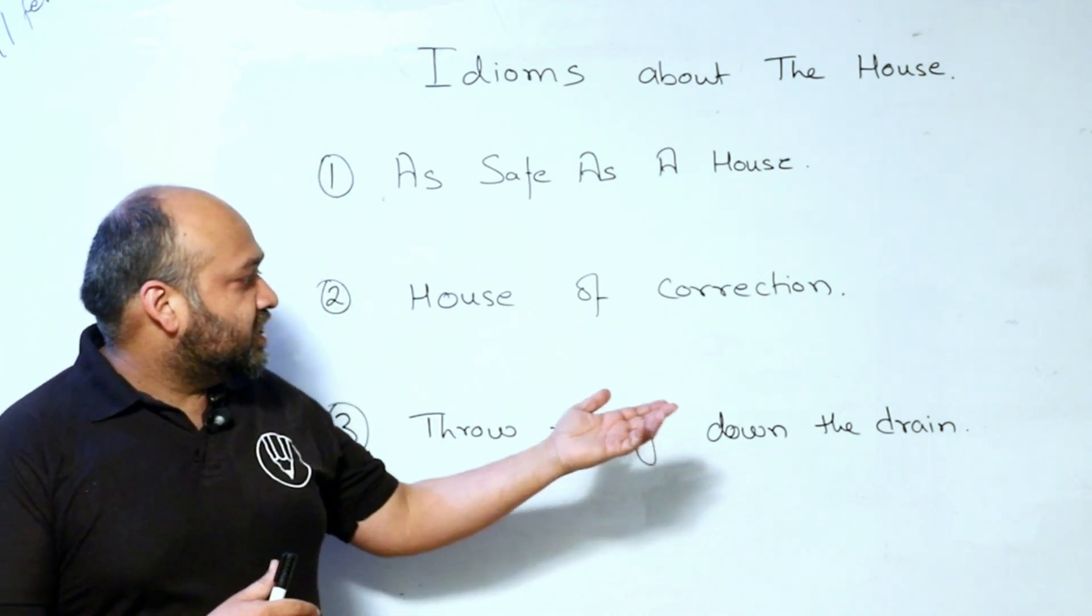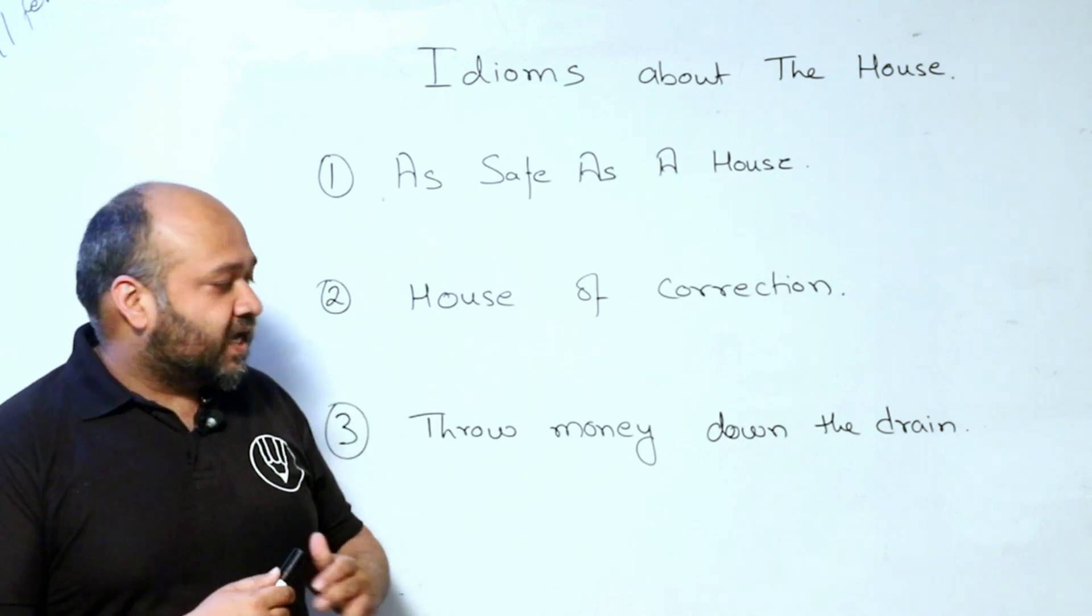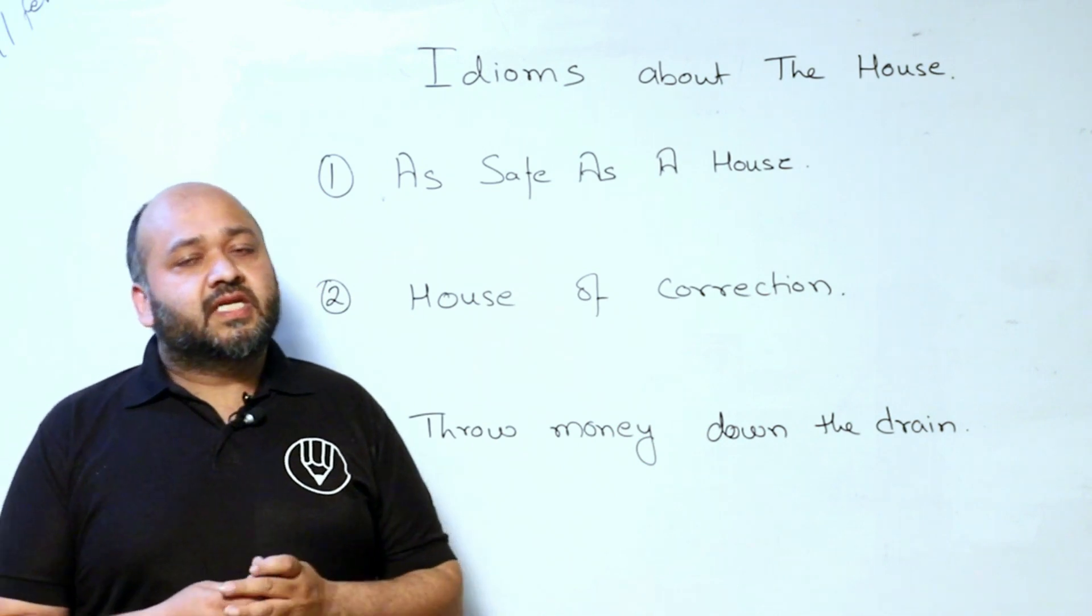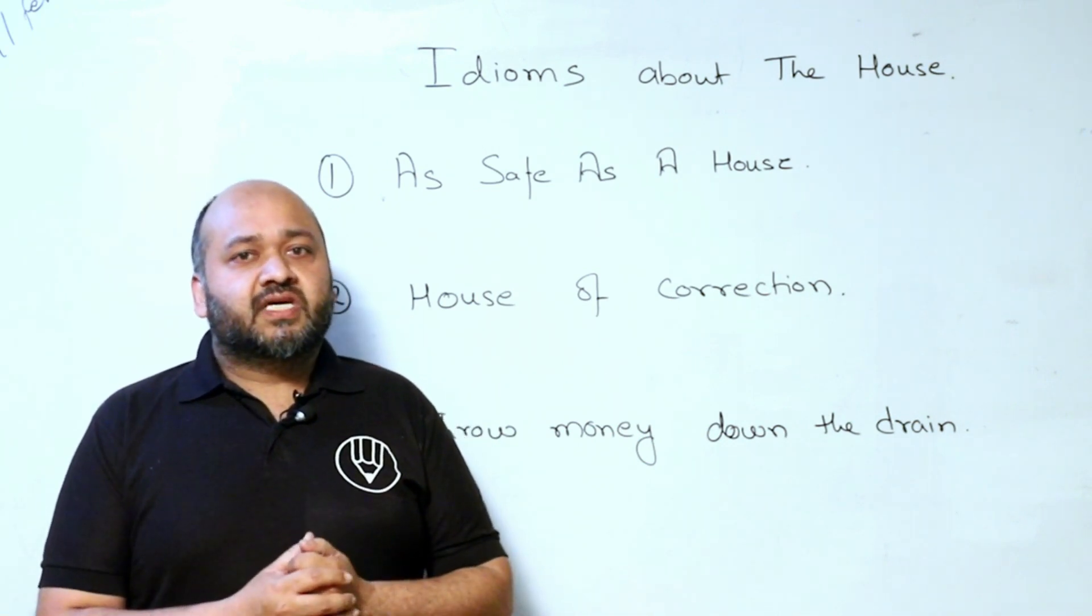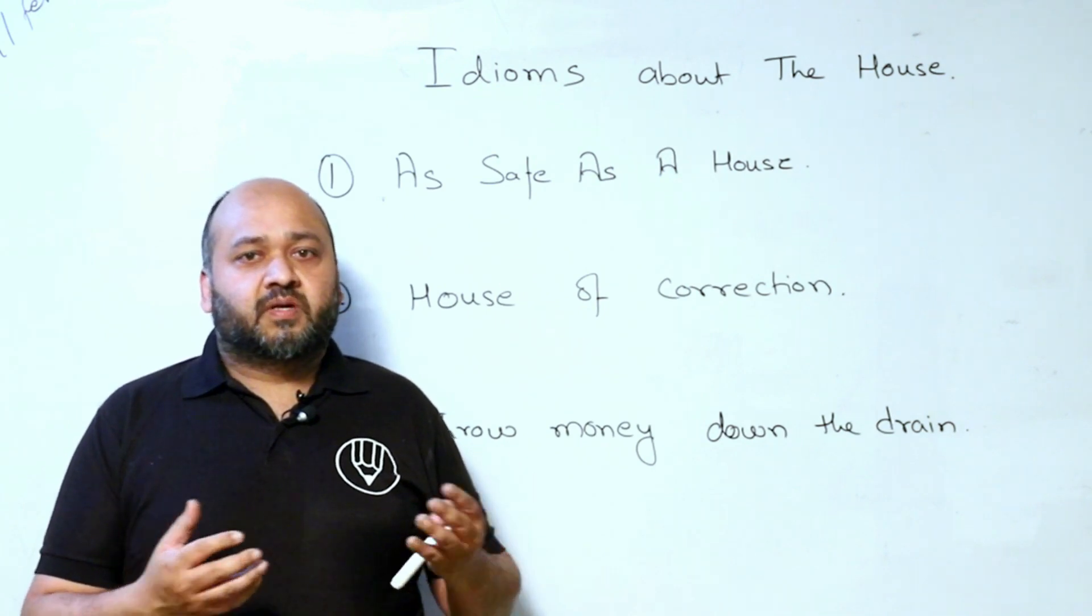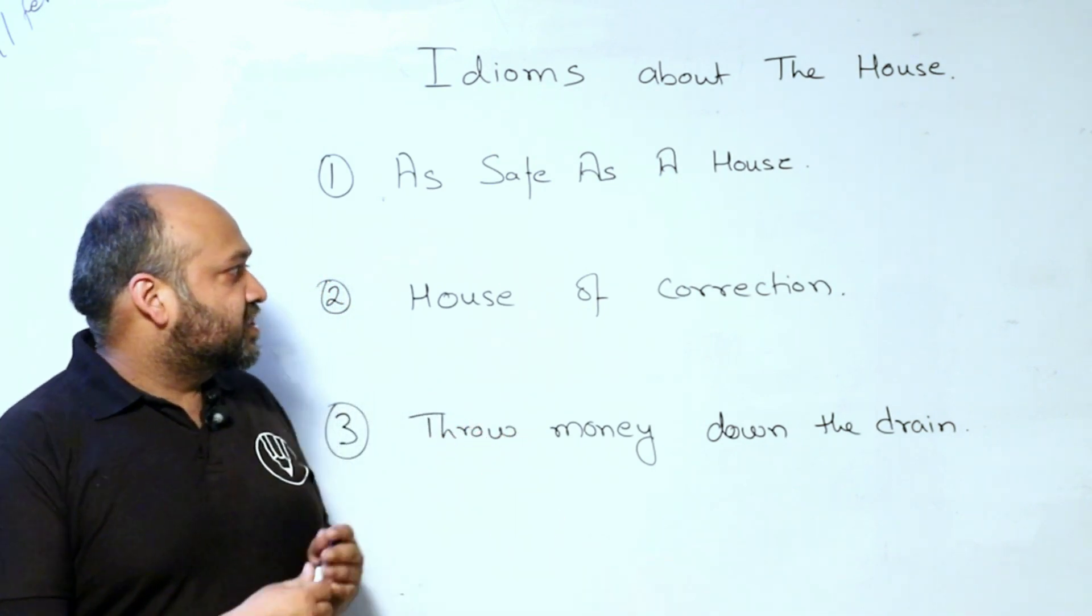The third idiom is throw money down the drain. This is easy. Drain means drainage pipe or gutter. So throwing money in the drain means to waste money. So these are our first three idioms.